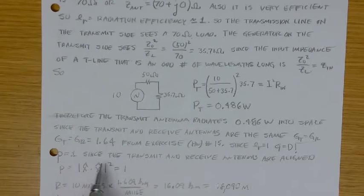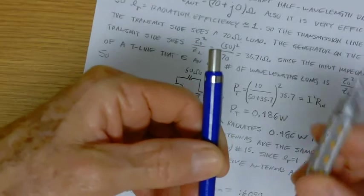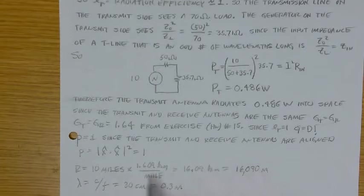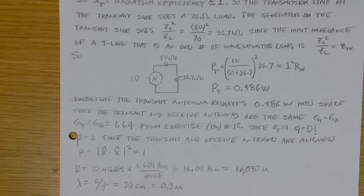So whatever power this absorbs is the same amount of power radiated into space by the transmitting antenna since the transmitting antenna is 100% efficient. So here I compute the current, 10 divided by 50 plus 35.7, square that and multiply by the resistance. And that gives me the power transmitted, which is about a half a watt, 0.486 watts. Assuming I did the arithmetic correctly. Therefore, the transmitting antenna radiates about a half watt into space. Since the transmitting and receiving antenna is the same, we know that G sub T is G sub R, and that's 1.64. We have that in that exercise you just completed.